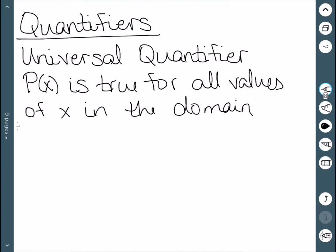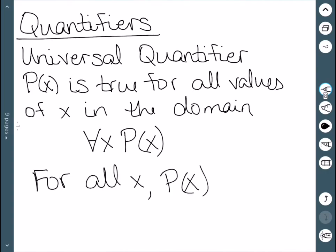Any number in the domain that you stick into this predicate will give a true statement. We denote the universal quantifier with this upside down A: for all x, P(x). This is read 'for all x, P(x).'